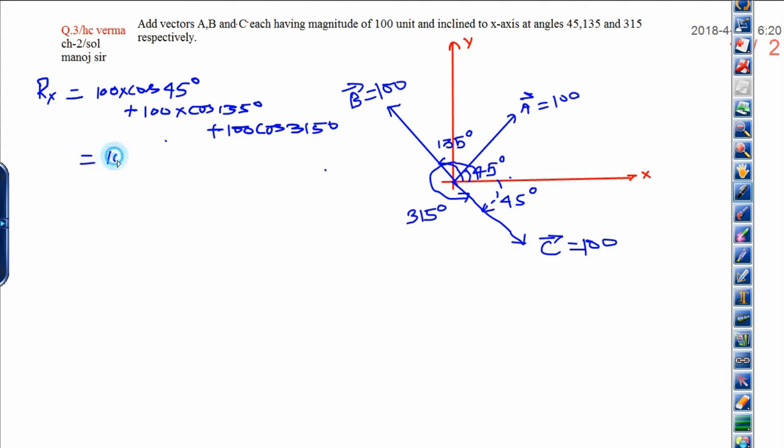Now solve them. That will be 100 divided by root 2 because cos 45 is 1 by root 2, plus 100 times cos 135, that is minus 1 by root 2, plus 100 times cos 315 degrees, which is 1 by root 2. Now this will cancel out and finally you will get 50 root 2 as the value of Rx.